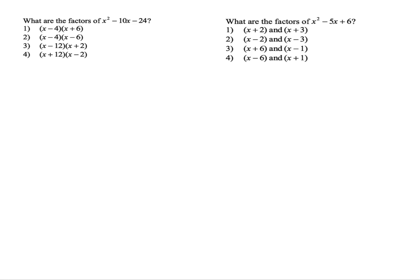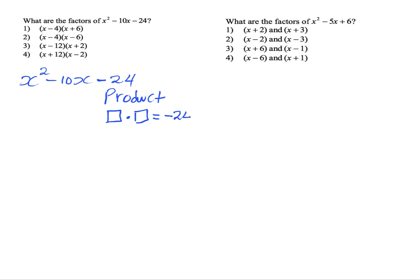My first problem: what are the factors of x squared minus 10x minus 24? So we have x squared minus 10x minus 24. The negative 24 represents the product, meaning I'm looking for two numbers that when they multiply each other, I get a result of negative 24. The negative 10 represents the sum. Therefore, the two numbers I choose that multiply to negative 24 must also add up to negative 10.